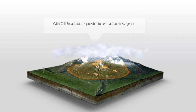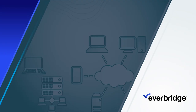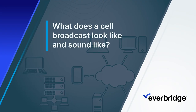With cell broadcast, it's possible to send a text message to millions of subscribers in near real time, with specific location information, including visitors from other countries, in the desired language, without being affected by network congestion.